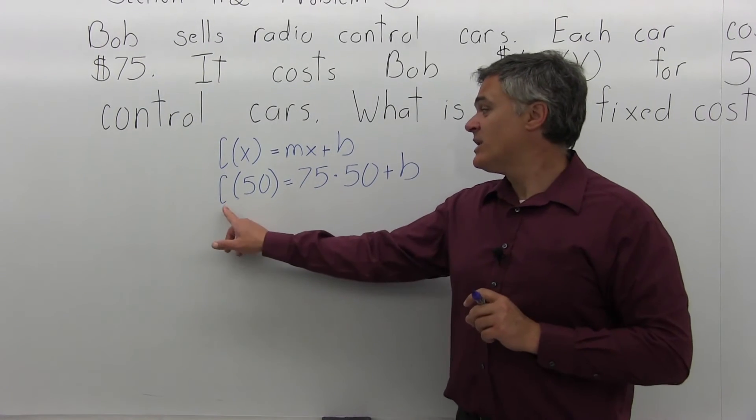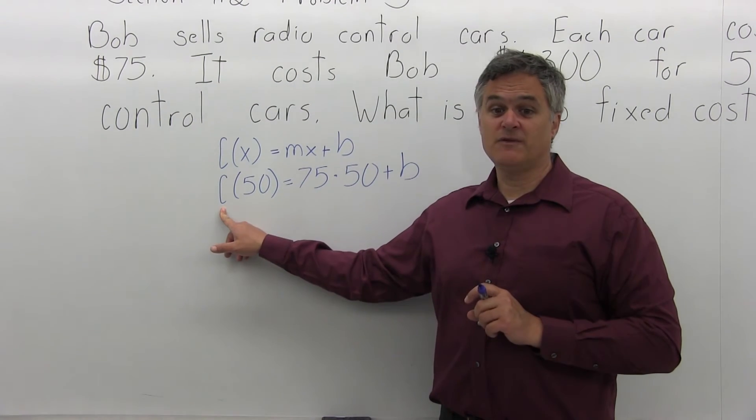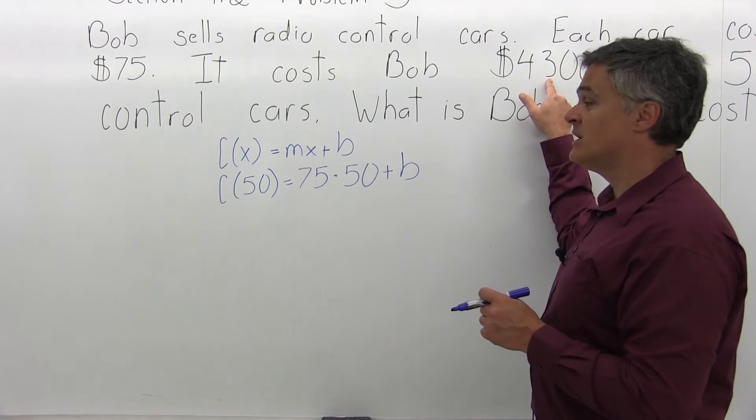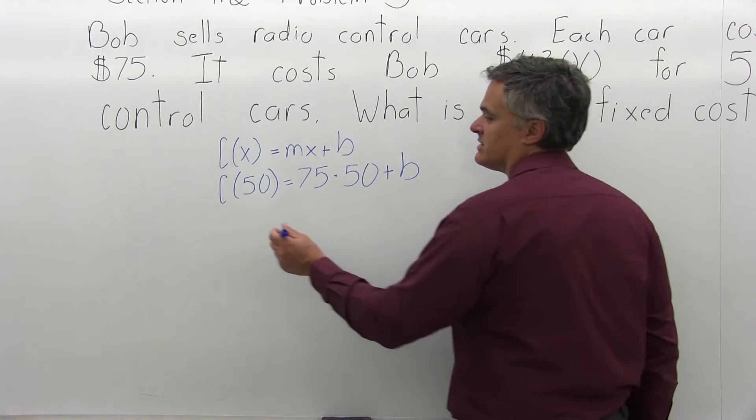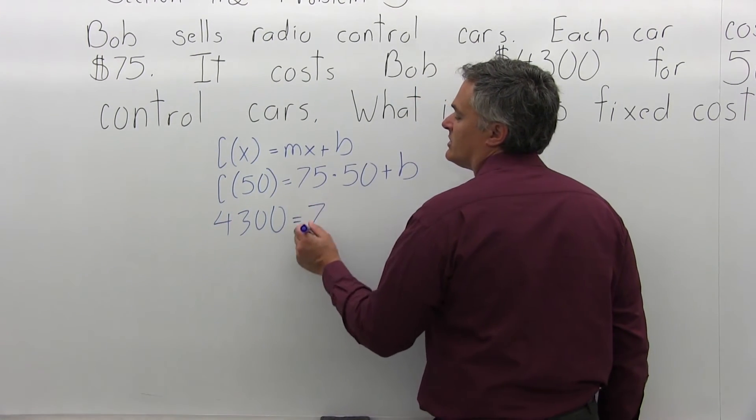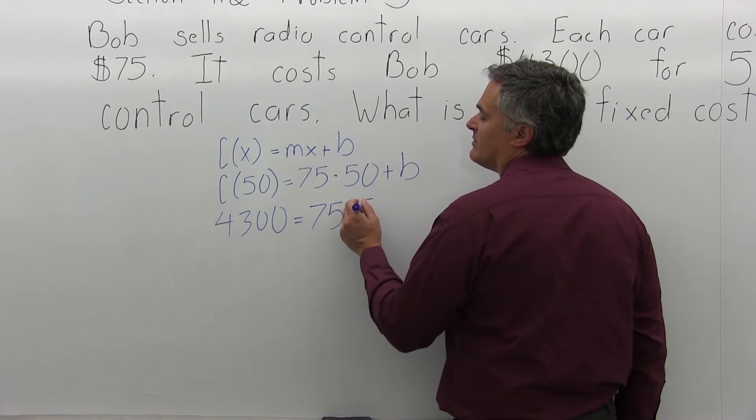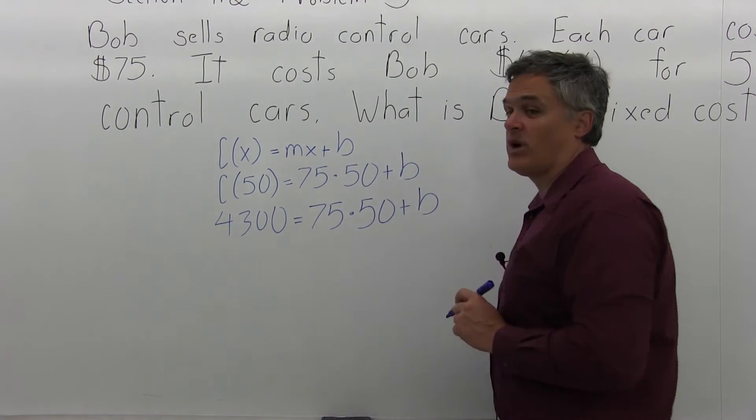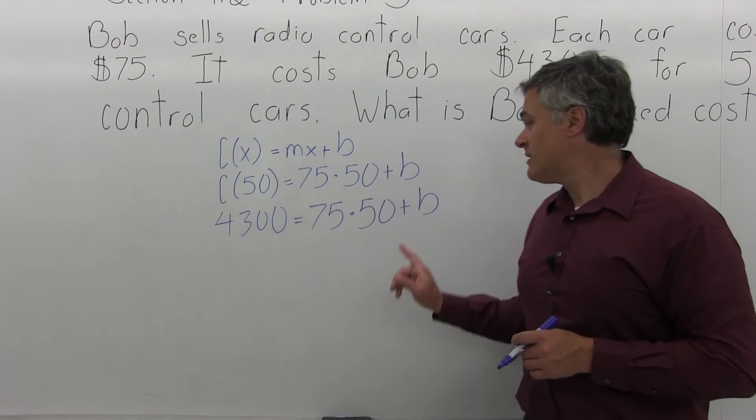So now on the left side of the equation, instead of C(50), I can replace that with 4,300, the cost to produce 50 radio-controlled cars. So 4,300 equals 75 times 50 plus B. And now we only have one unknown. We can do the math and get the B by itself.